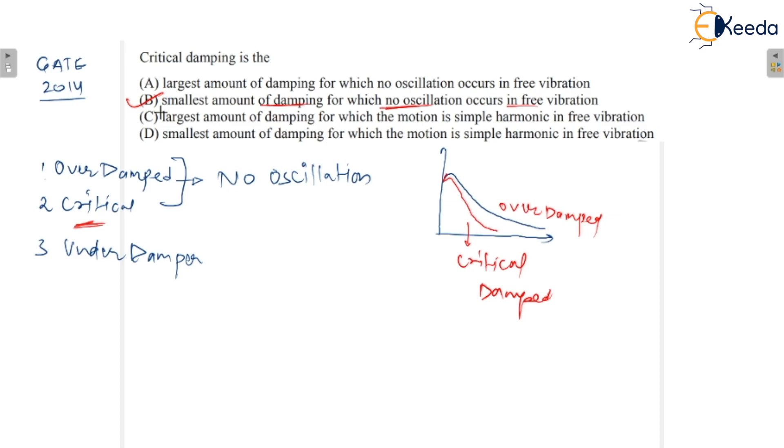If you find out the damping ratio, you can see that for over damped system, damping ratio is greater than 1. For critical damped, damping ratio is equal to 1. And for under damped zeta is less than 1. This is damping factor or damping ratio.